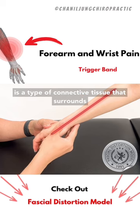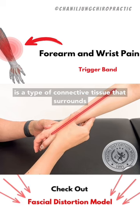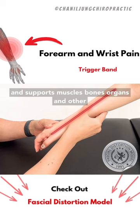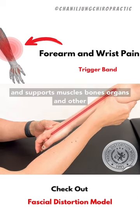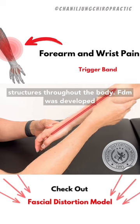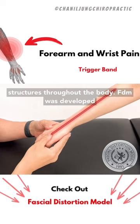Fascia is a type of connective tissue that surrounds and supports muscles, bones, organs, and other structures throughout the body.